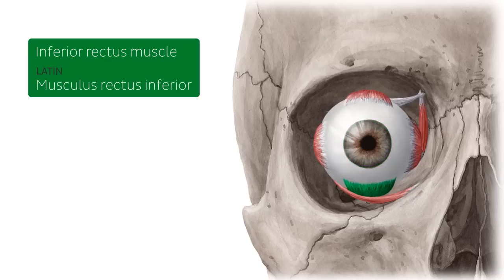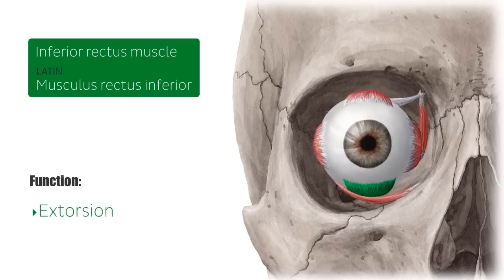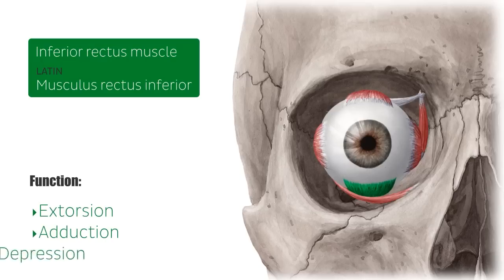When the eye is in a neutral position, the inferior rectus muscle is responsible for the following movements of the eye: extortion, which is outward or lateral rotation; adduction, which is medial movement towards the midline; and depression, which is movement inferiorly.